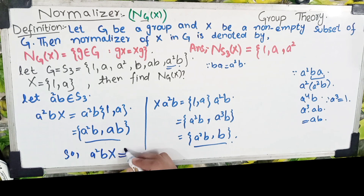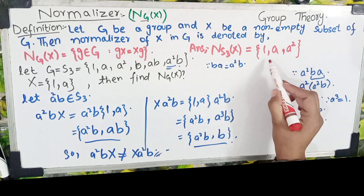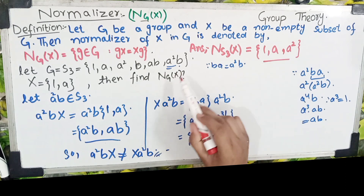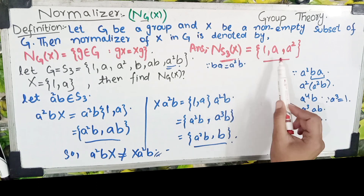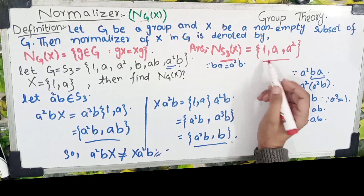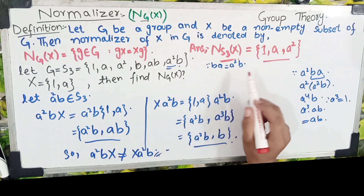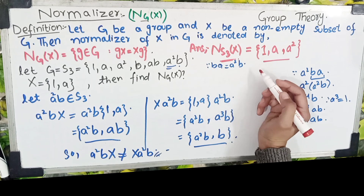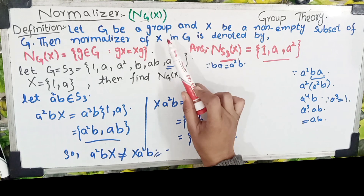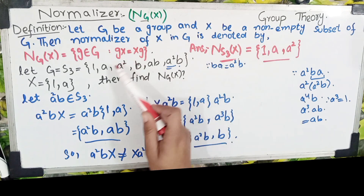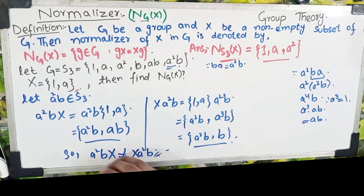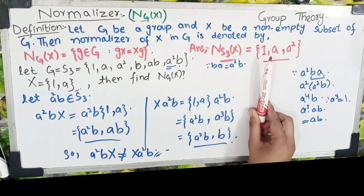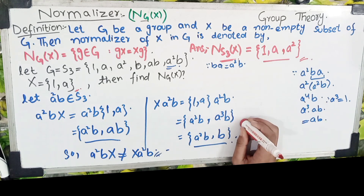جو elements permute نہیں کریں گے وہ normalizer کے set میں نہیں لکھیں گے۔ ہم نے one by one group کے سارے elements check کیے — پہلے تین elements permute کر رہے ہیں کیونکہ S3 ایک non-abelian group ہے۔ اس لیے N_S3(X) = {1, a, a²}۔ Normalizer کبھی بھی empty set نہیں ہوتا کیونکہ identity (1) ہمیشہ permute کرتا ہے۔ ہمارے پاس group given ہوگا اور non-empty subset — ایک ایک element کو left اور right side سے permute کرانا ہے، جو permute ہو جائیں وہ normalizer کا answer ہوگا۔